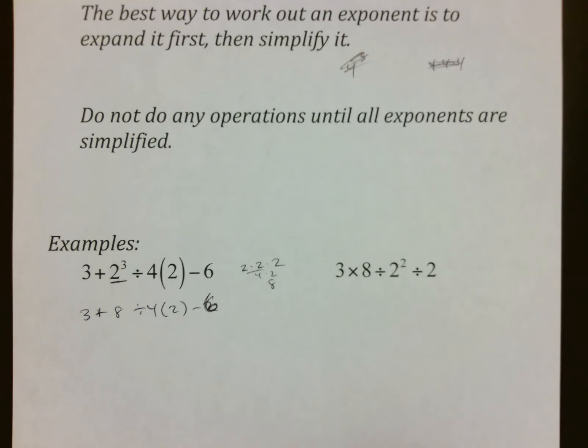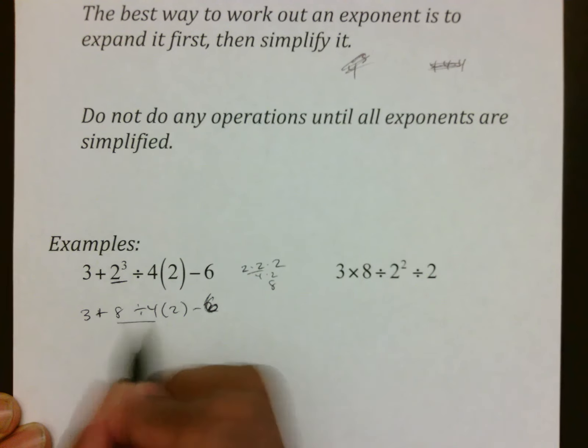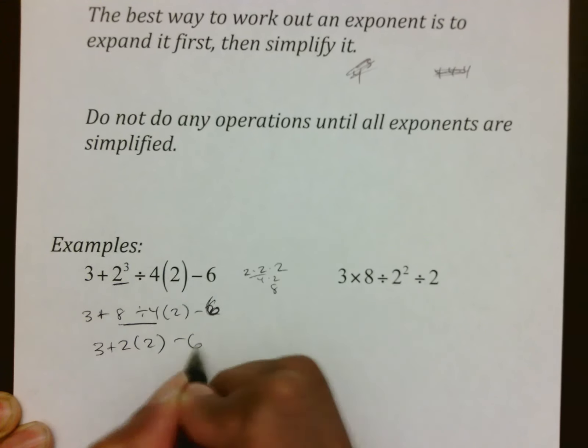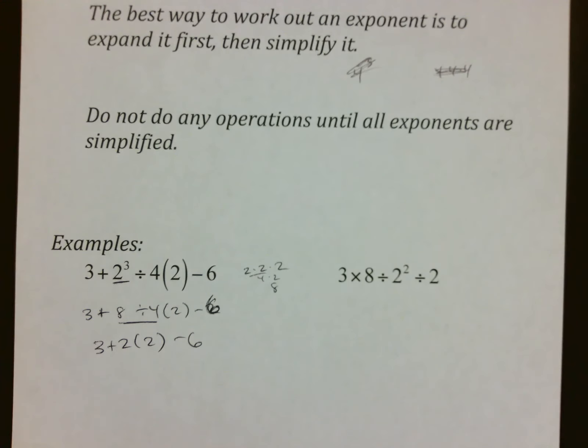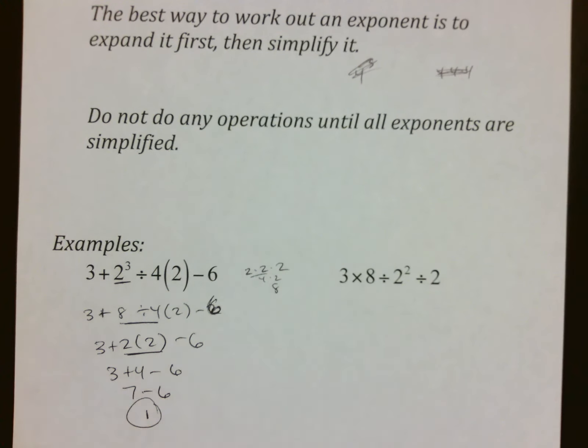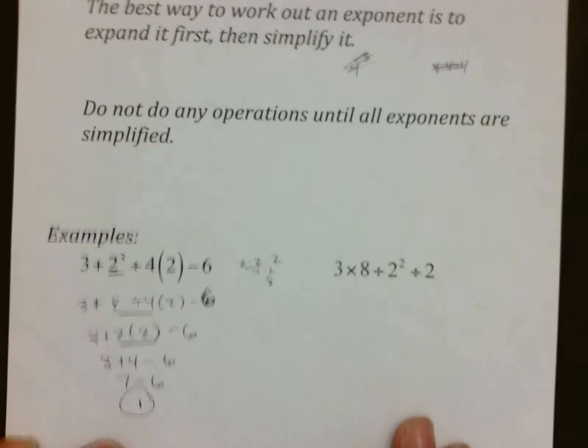From there, we play our game of VIP. Are there any VIP in line? Yep, 8 ÷ 4, so 3 + 2(2) - 6. Are there any VIP in line? Yep, there's your multiplication: 3 + 4 - 6, which turns into 7 - 6, or 1.